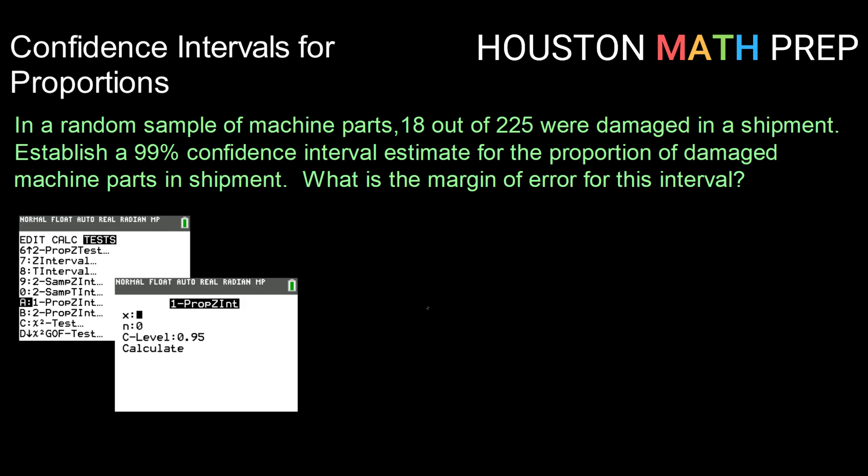Let's go in with an example. In a random sample of machine parts, 18 out of 225 were damaged in a shipment. First, we want to establish a 99% confidence interval estimate for the proportion of damaged machine parts in a general shipment. Also, we want to answer the question, what is the margin of error for this interval?